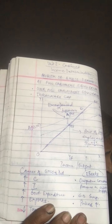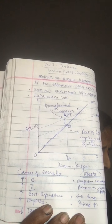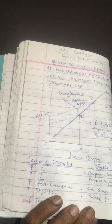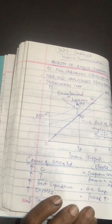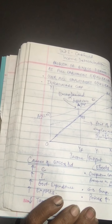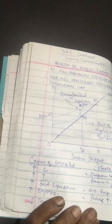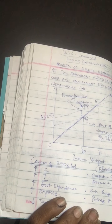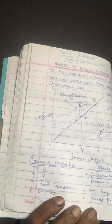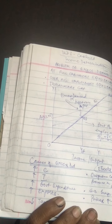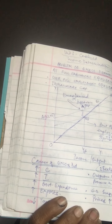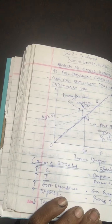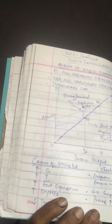In the figure, we can see it depicts excess demand. The X axis measures the level of income and output, and the Y axis measures aggregate demand, C plus I. AS is the aggregate supply curve. ADF and AD1 denote aggregate demand curves — ADF is aggregate demand at full employment, and AD1 is the current aggregate demand.